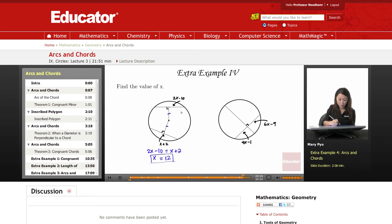So here, again, since we know that the cords are equidistant to the center, the cords will be congruent. So I just made them equal to each other. 2x minus 10 equal to x plus 2. And then you get x equals 12.